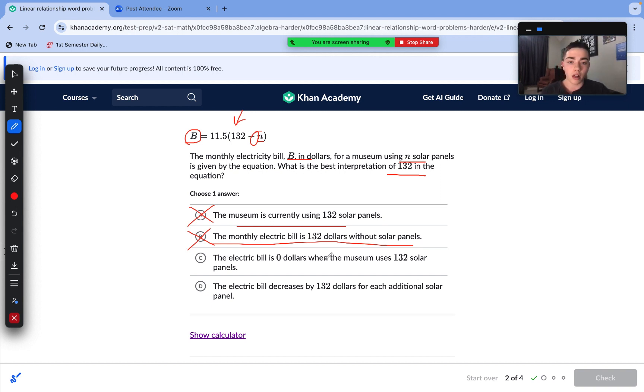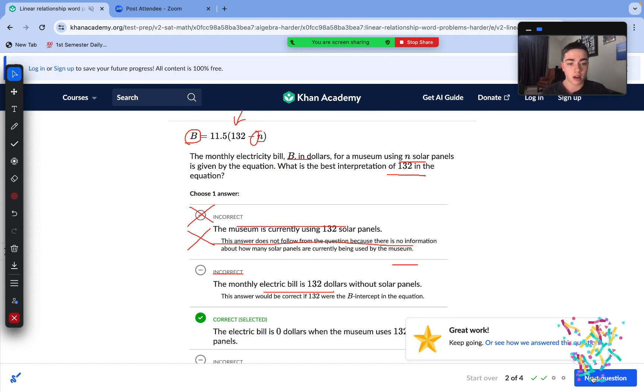Let's take a look here. The electricity bill is zero dollars when the museum uses 132 solar panels. So let's try this one out. If we substitute 132 for n into our question, we can see that we indeed get zero times 11.5, which is zero. So C is a correct statement, meaning it is our best interpretation of 132. And let's just check out our last answer choice here. The electricity bill decreases by 132 dollars for each solar panel. That doesn't make sense. So C is our correct answer here.